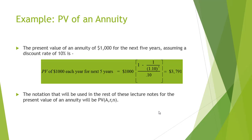Let us solve a computational example of present value of an annuity. The present value of an annuity of $1,000 for the next 5 years, assuming a discount rate of 10%, is $3,791 as calculated on the slide. The notation that will be used in the rest of these lecture notes for the present value of an annuity will be PV(A, r, n).